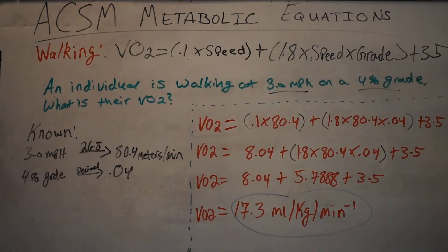And then plus 3.5. A lot of people ask me why the plus 3.5 at the end. That is to take into account the resting VO2, which for every individual is 3.5 milliliters per kilogram per minute. That's where that number comes from.